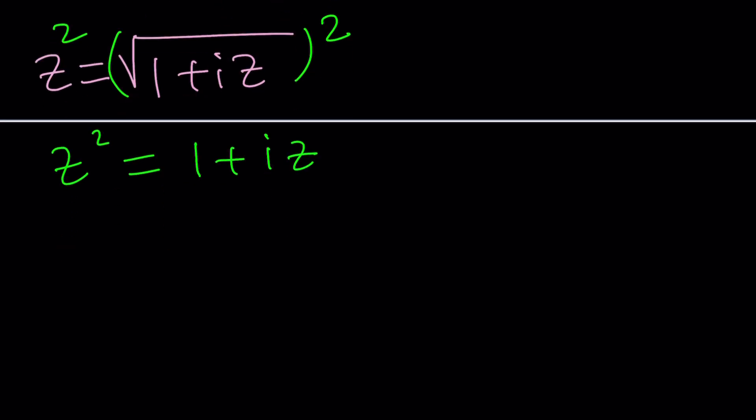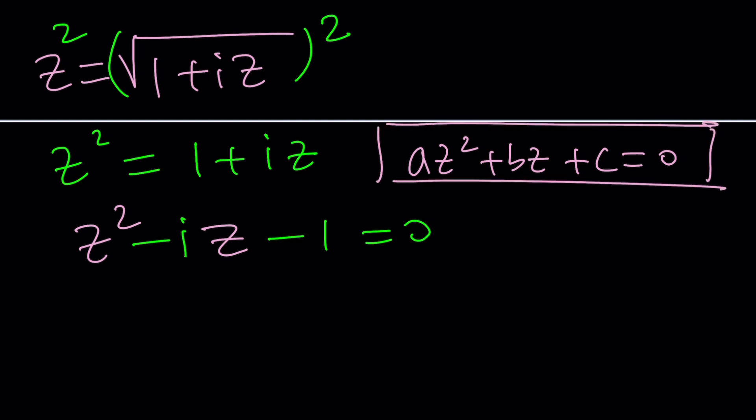Now we can put everything on the same side because this will give us a quadratic equation. This is quadratic because this is Z squared and this is Z. So as you can see, it's like AZ squared plus BZ plus C equals 0. So that's a quadratic in Z. In this case, A is 1, B is negative i, and C is negative 1. And it's okay to have complex or imaginary coefficients.